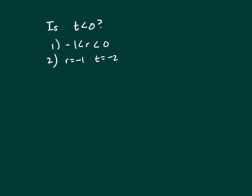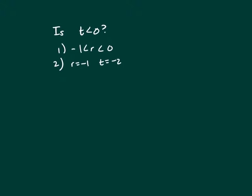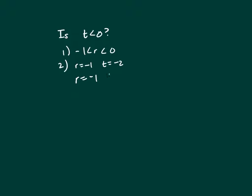But also, if I let... So here t is negative. But you can also do it if you let r be negative 1 and t be 0. The distance between r and t is 1, and 1 squared is 1. But here, t is not negative. So sometimes clue 2 works, sometimes it doesn't.